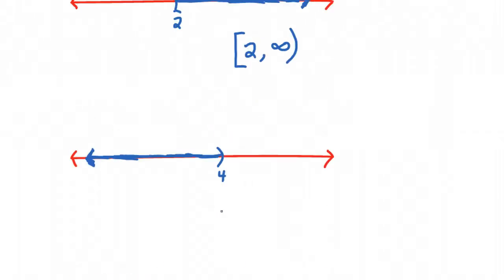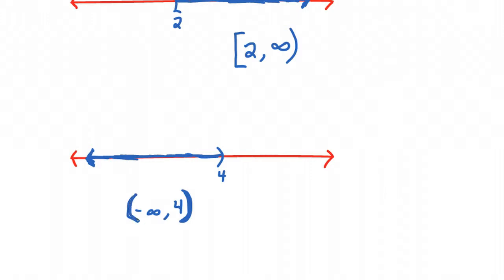Now let's suppose we have an interval to the left. This one is open at 4, and it's an interval that extends all the way to the left with no left endpoint — the arrow keeps continuing on and on to the left. We're going from negative infinity to 4, and we put an open parenthesis at 4 because that point is open. We also always put an open parenthesis around the infinity. So it's the interval from negative infinity to 4.